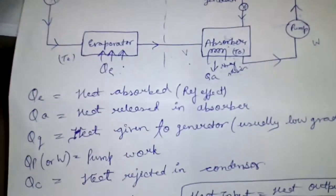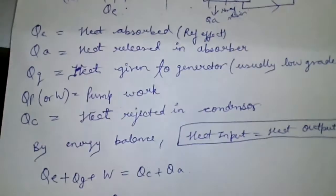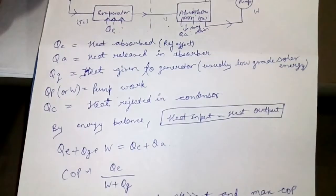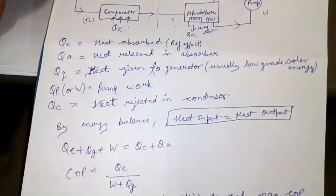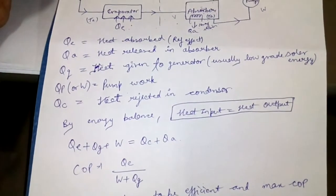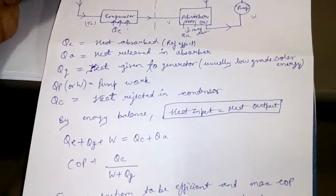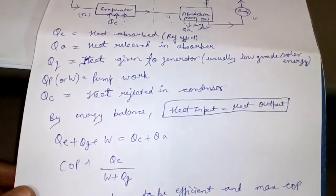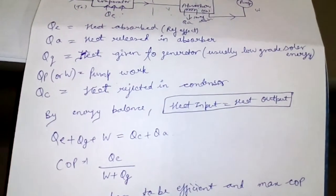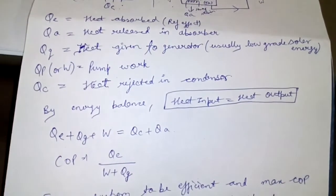Now by energy balance, heat input is equal to heat output. So QE plus QG plus W is equal to QC plus QA. This is one equation which can be used in numerical to calculate the heat rejected QC or QA.